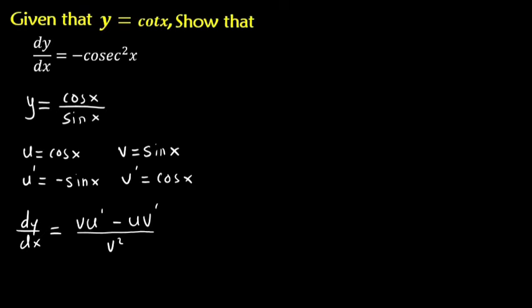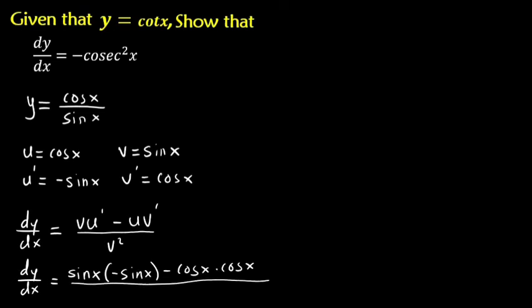So let's just do the substitutions now. So dy dx, our v is sine. So sine is multiplying u prime. Our u prime is negative sine. Minus our u is cos. Our v prime is cos. So we have this. And remember all this is over v squared, of which our v is sine. So it's over v squared, that is sine squared.